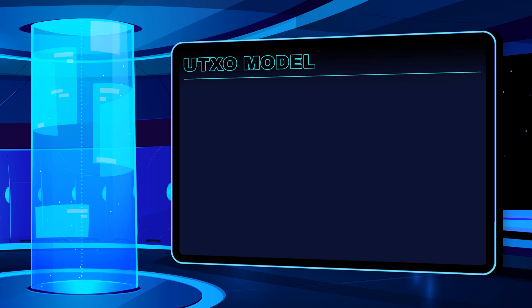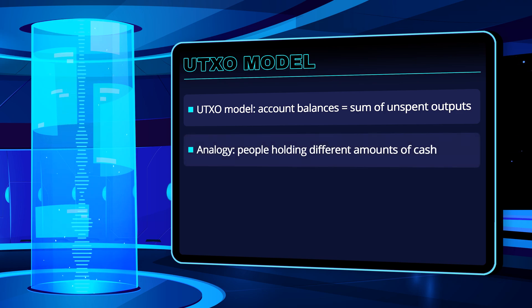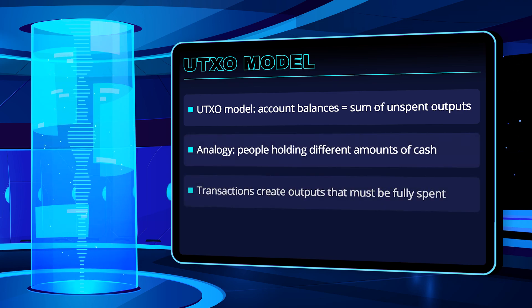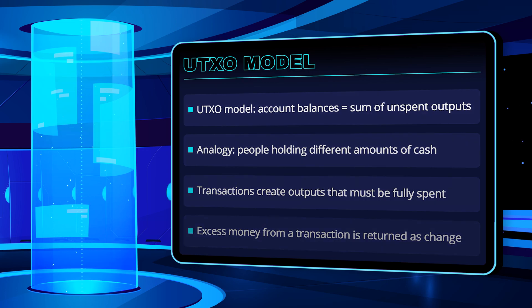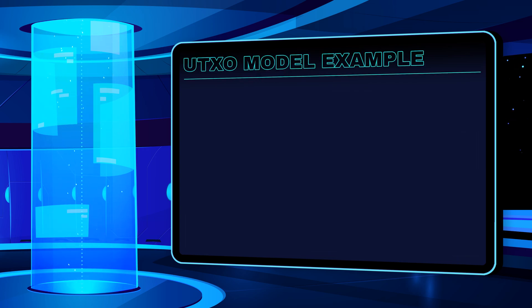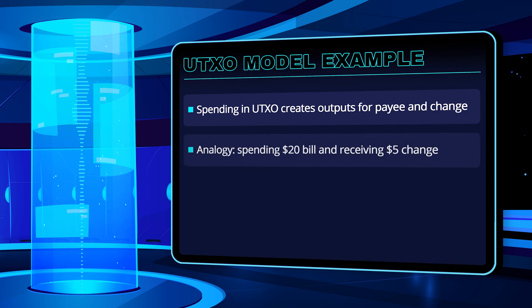In the UTXO model, account balances are calculated by adding up the available unspent transaction outputs. This is like people holding different amounts of cash in their pockets. Each transaction creates outputs that must be spent as a whole, and any excess money is sent to a self-controlled address as change. For example, if you spent 15 ADA from a UTXO containing 20 ADA, you will create two outputs in the transaction – one for the payee, and one for the change to the original owner. This is like spending $15 with a $20 bill and receiving $5 in change.